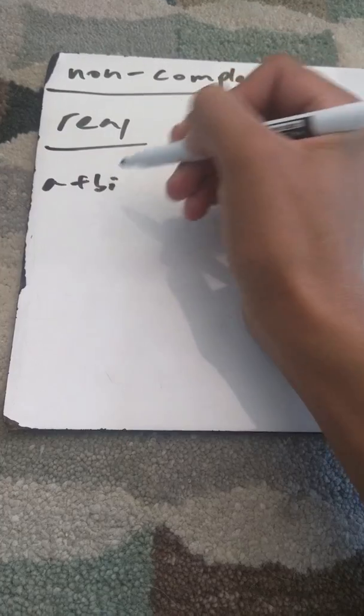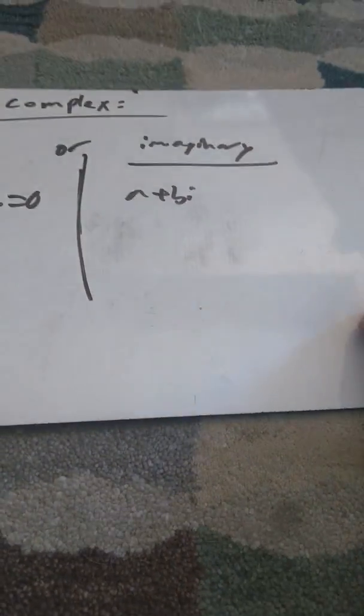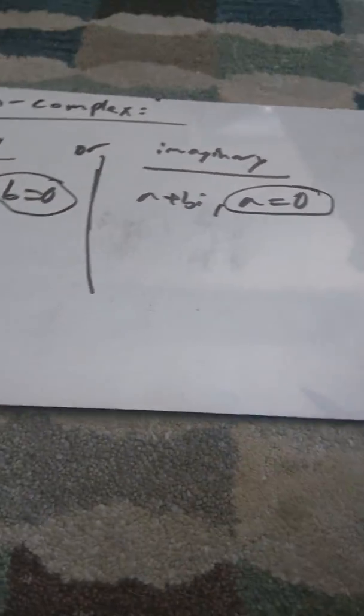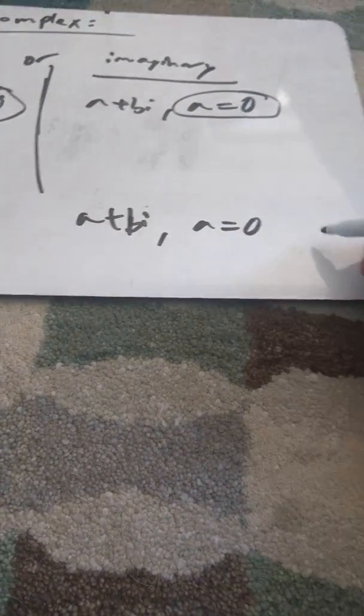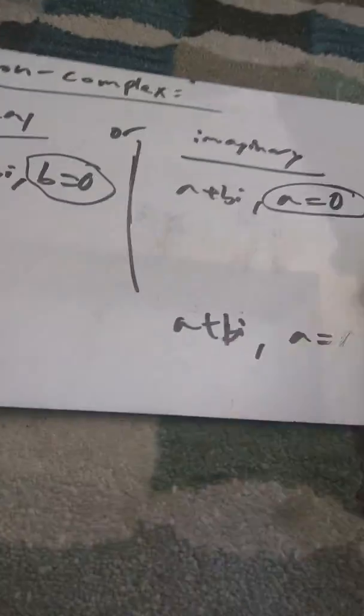And finally, we have non-complex numbers. They could be real or imaginary. Real is a plus bi where b equals 0, and imaginary is a plus bi where a equals 0. So the answer is the set of a plus bi where a equals 0 or b equals 0. Non-complex is real or imaginary, so a equals 0 or b equals 0, and there you have it.